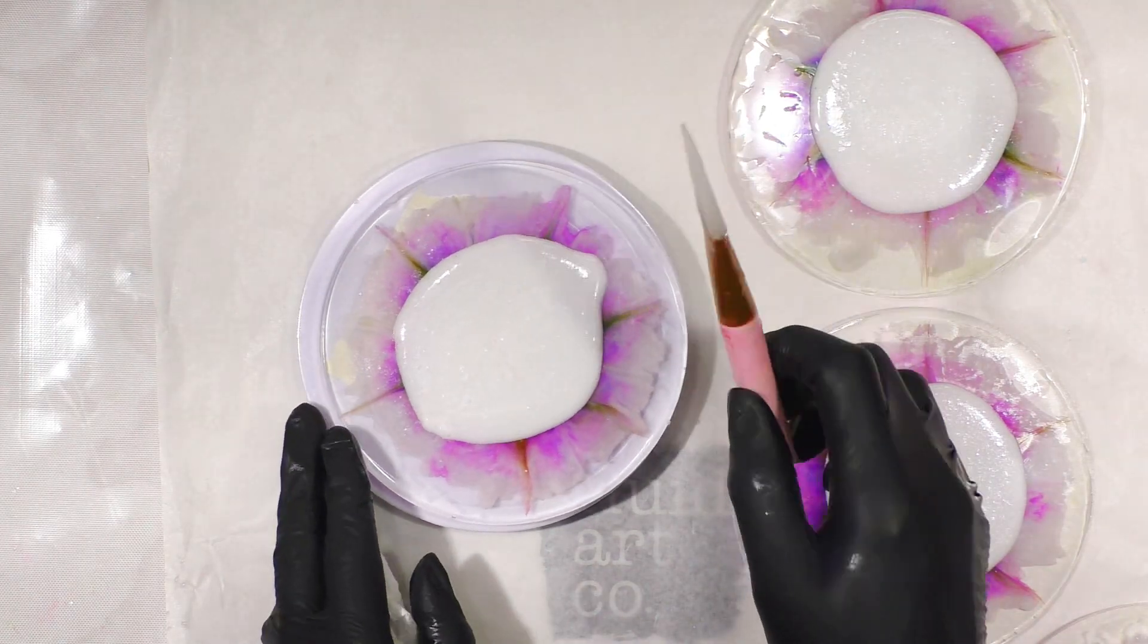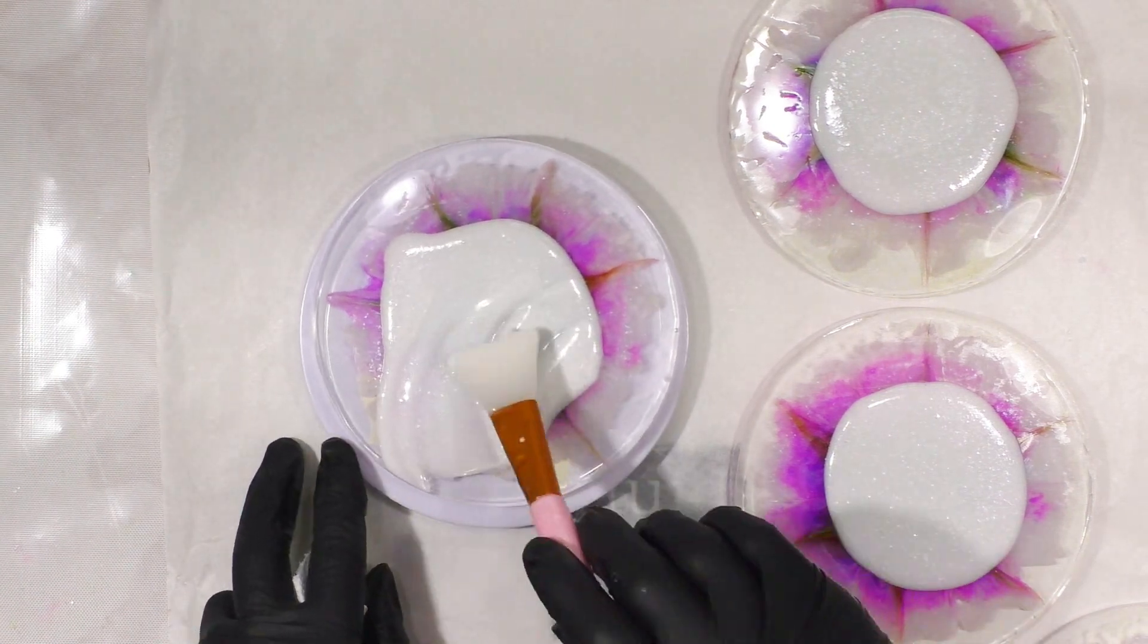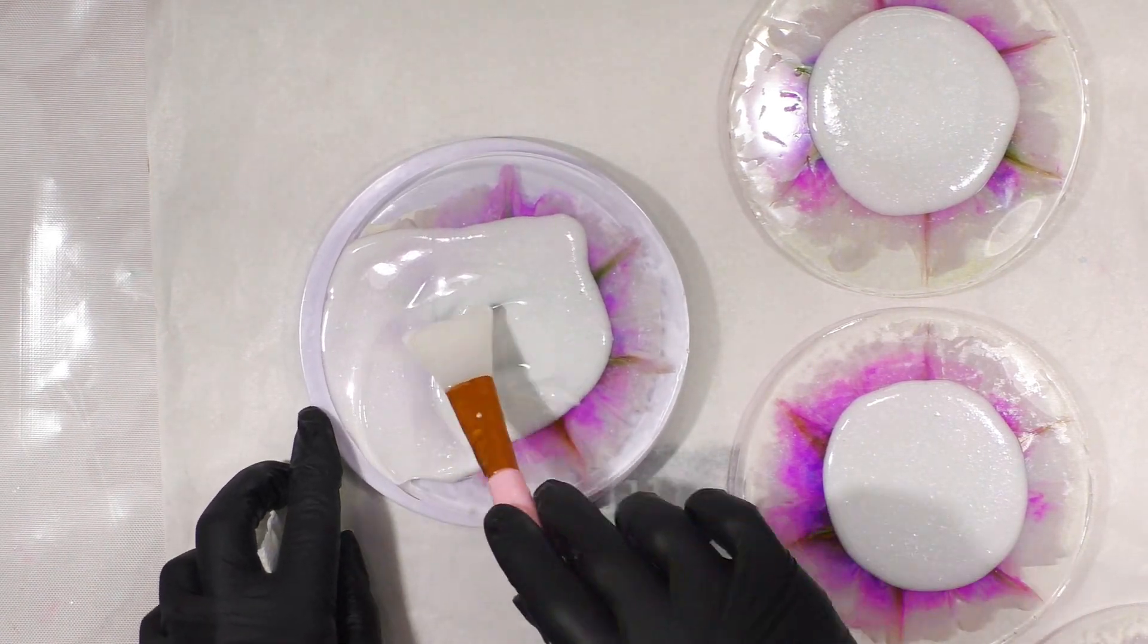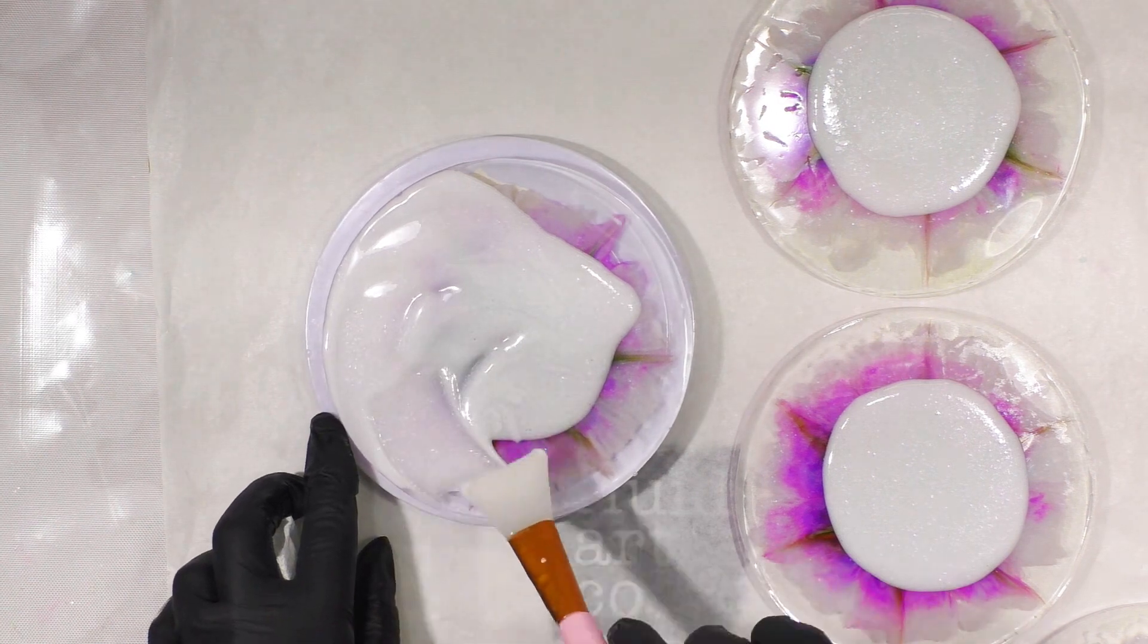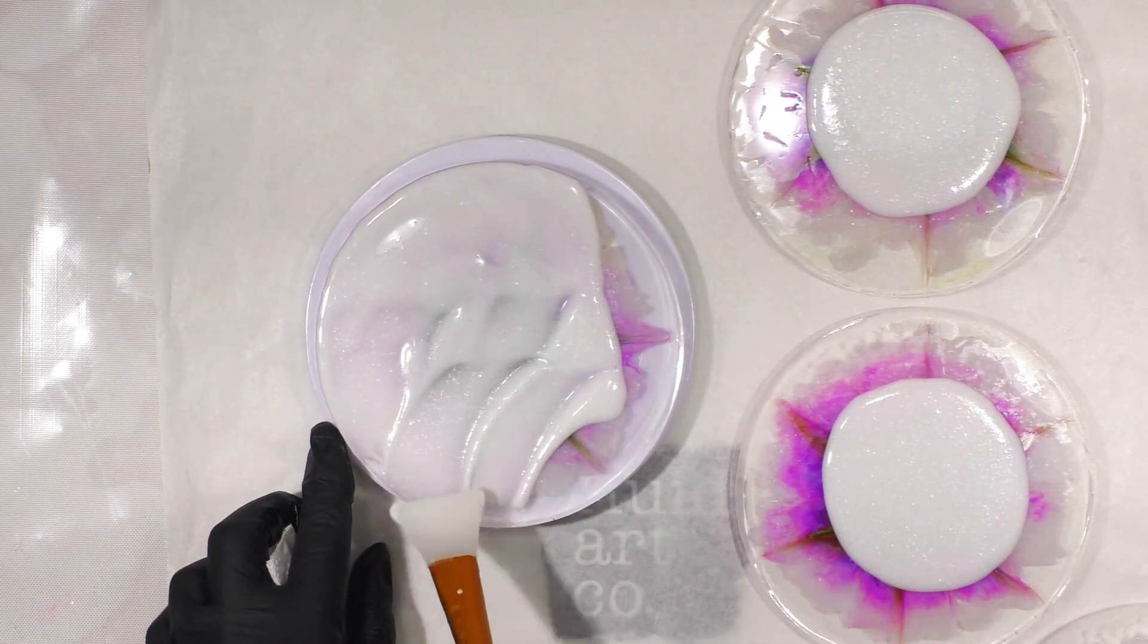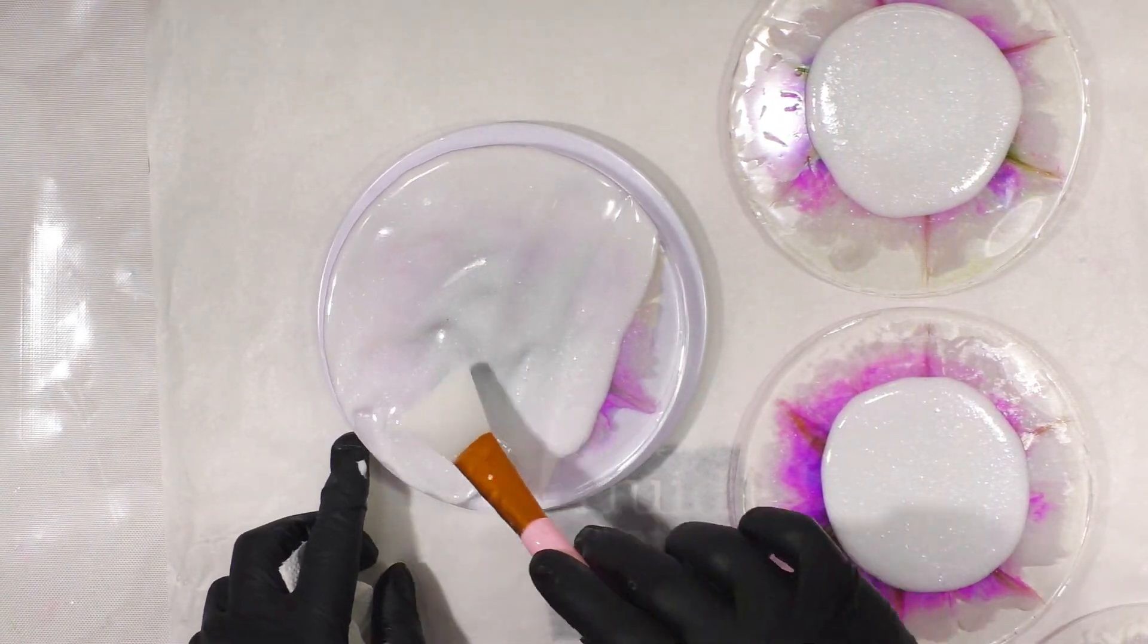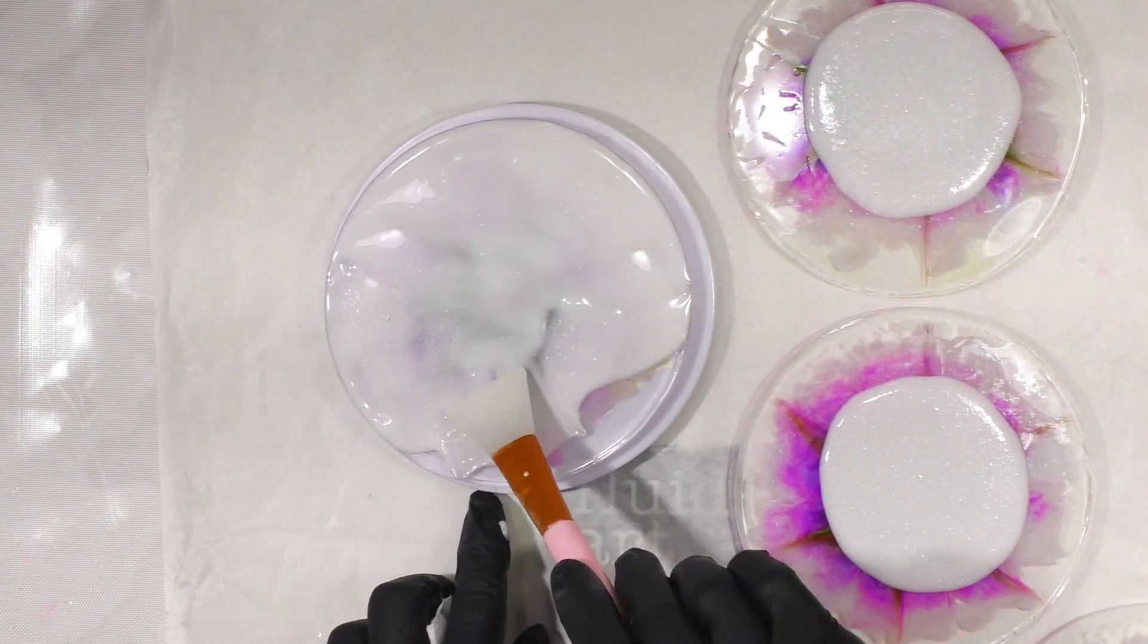And if you use a turntable I've got a little mini turntable. It just makes it easier. You can hold the coaster but this makes it easier to where you don't have to worry about getting your coaster covered with fingerprints where you might have some resin on them or something like that.